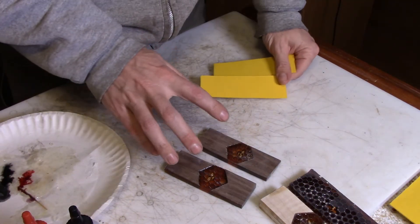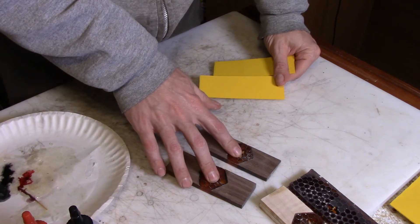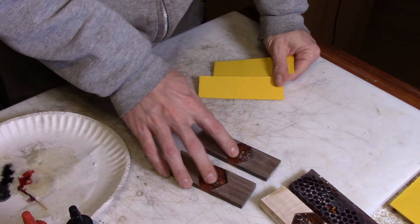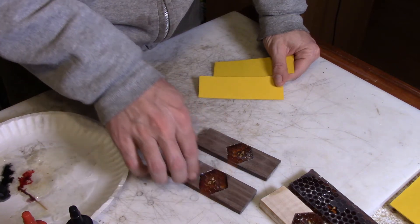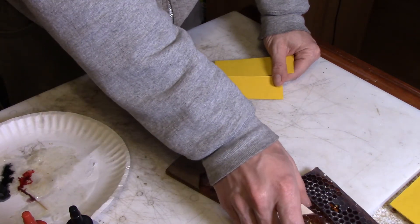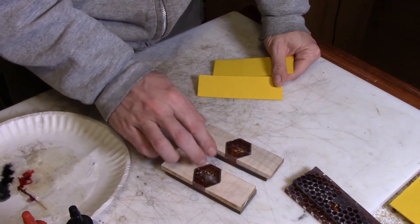Alright, I'm going to probably use these walnut scales, walnut and bee scales. I like the way that they, the contrast that I've got on those. The curly maple and bees are pretty good too.